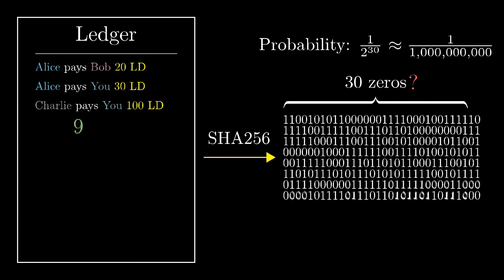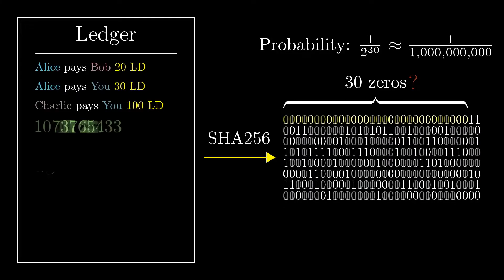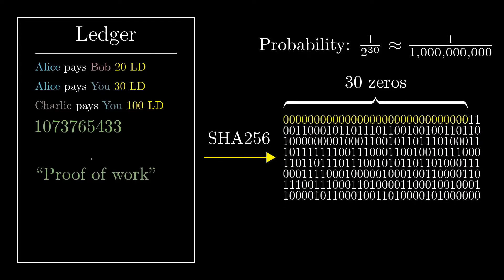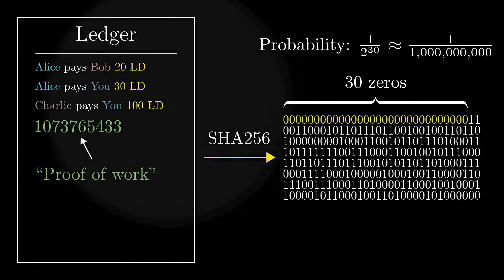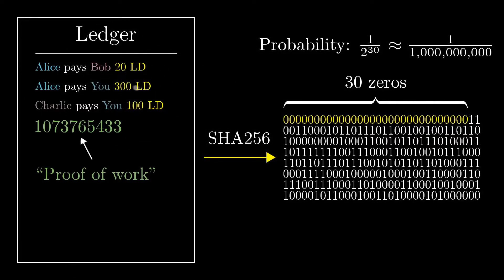This is called a proof of work. And importantly, all of this work is intrinsically tied to the list of transactions. If you change one of those transactions, even slightly, it would completely change the hash.